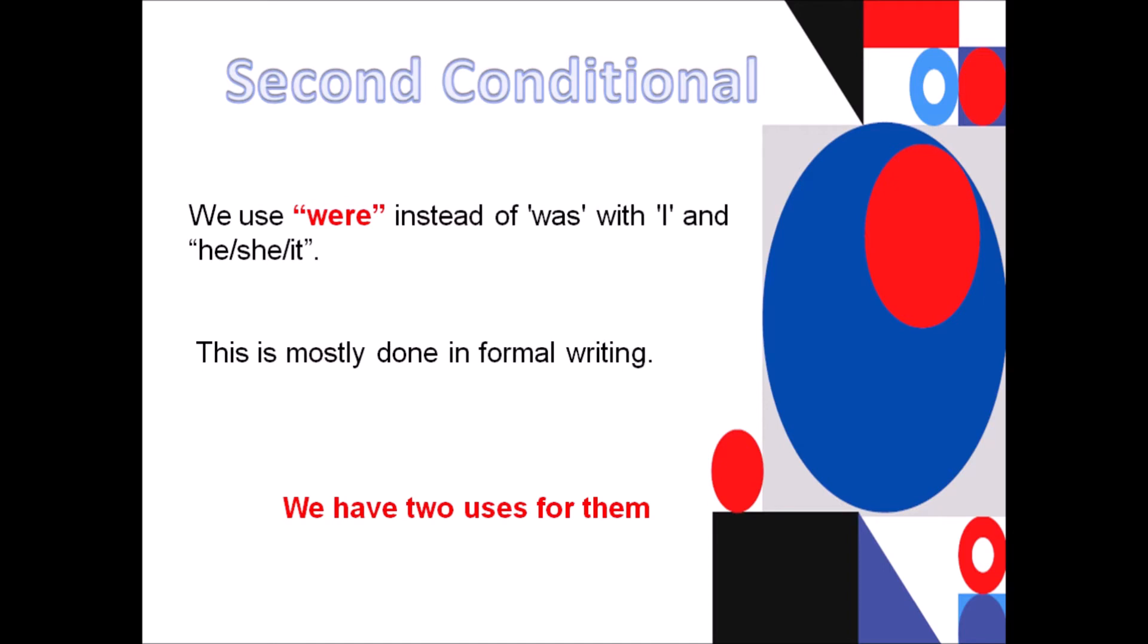Move on guys. And pay attention to this part. We use were instead of saying was with I, he, she, and it. So this is mostly done in formal writing. So guys, let me explain to you why. We generally have the verb to be in the past as I was, you were, he, she, it was, they were, you were. But with the conditionals, we say all of them with were. So if I were you, I would go to the party. If I were a boy, I think I could understand. Easy?